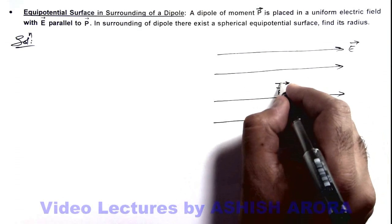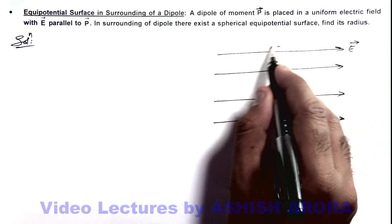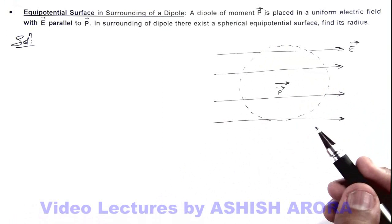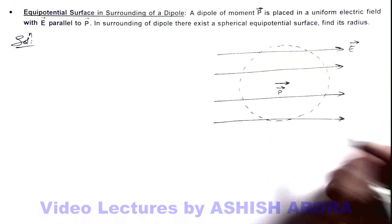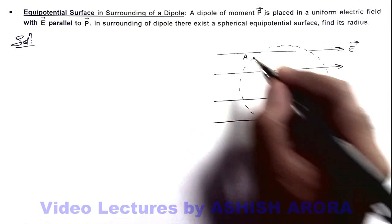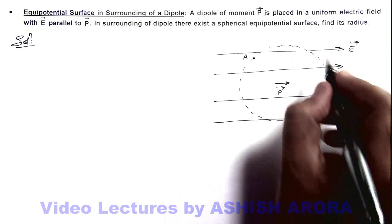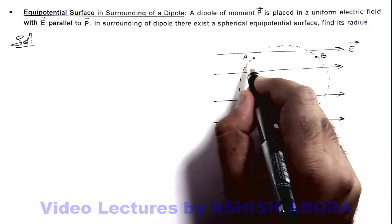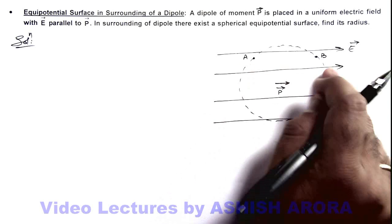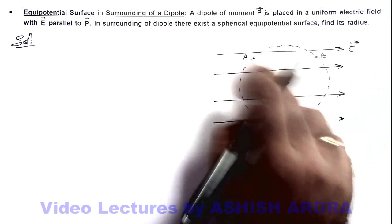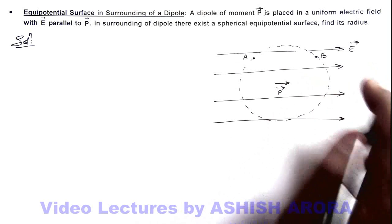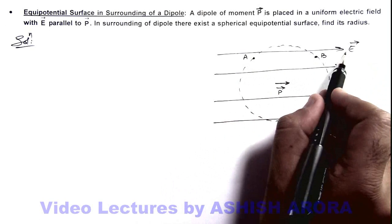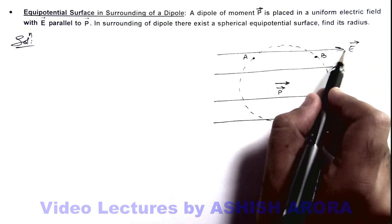By taking this dipole as center, if we draw a spherical surface and consider it to be an equipotential surface, that means any point A on this surface and any other point on the surface will have the same potential. But in the electric field, if two points are displaced they have some potential difference given by E·d, where d is the separation between the two points.